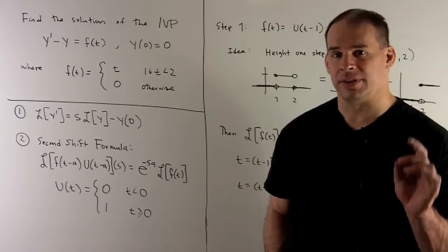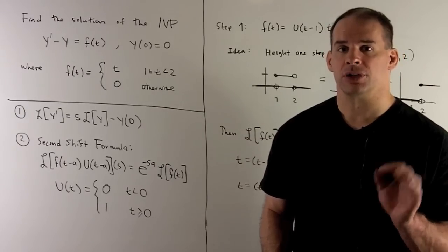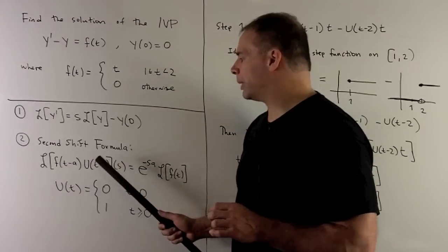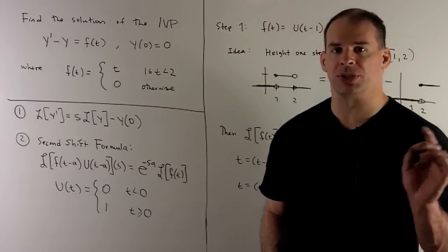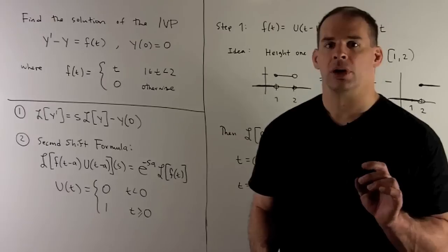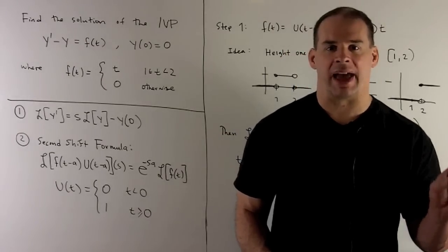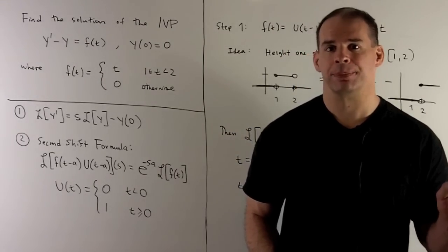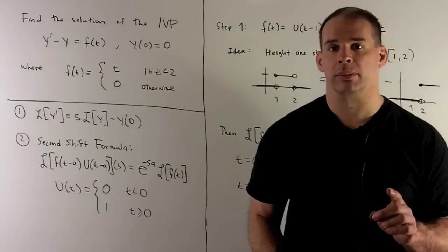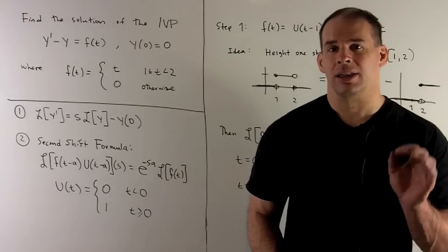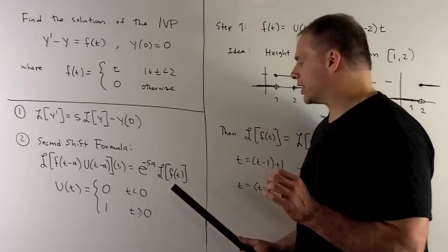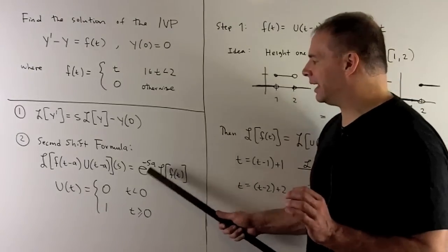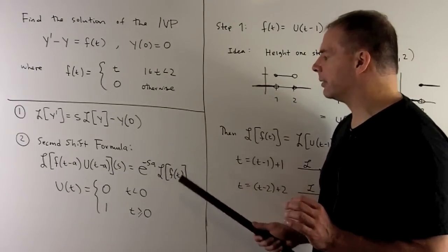Then we have the second shift formula. That says we take f of t, multiply it by the unit step function u of t, shift everything to the right by a — replacing t with t minus a — and take the Laplace transform. We get the Laplace transform of f of t, corrected by multiplying by e to the minus s times a.